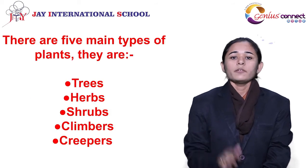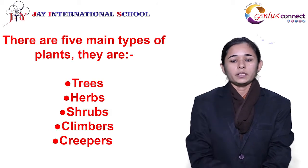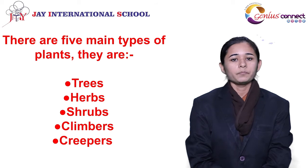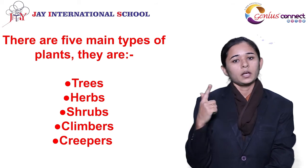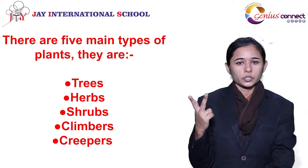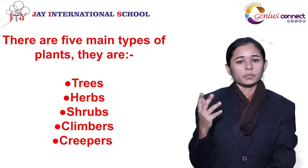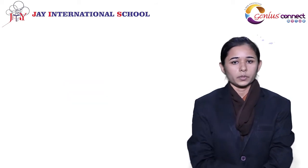There are five main types of plants. They are trees, herbs, shrubs, climbers, and creepers.